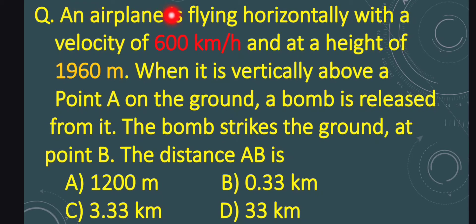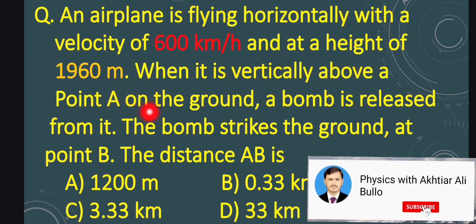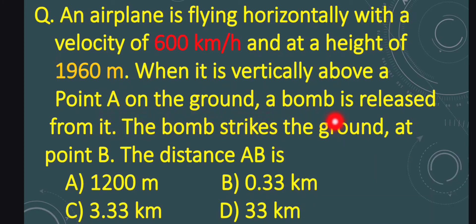An airplane is flying horizontally with a velocity of 600 km per hour at a height of 1960 meters. When it is vertically above point A on the ground, a bomb is released from it. The bomb strikes the ground at point B. What is the distance AB? Options: A) 1200 meters, B) 0.33 km, C) 3.33 km, D) 33 km.